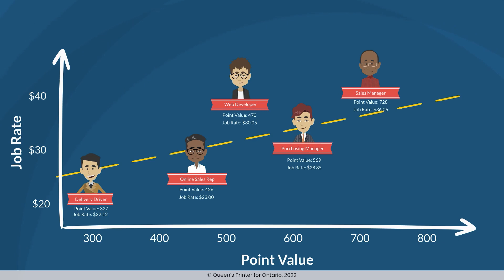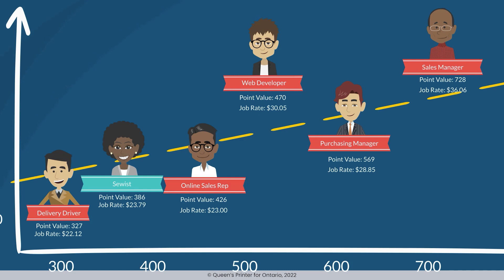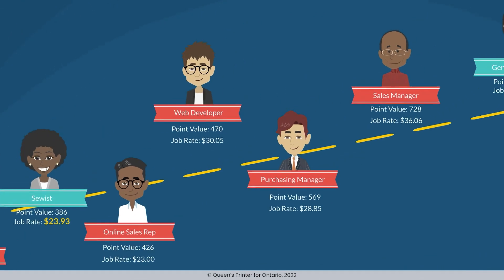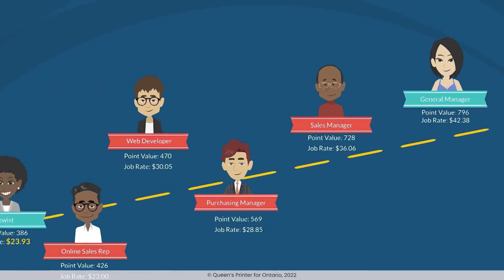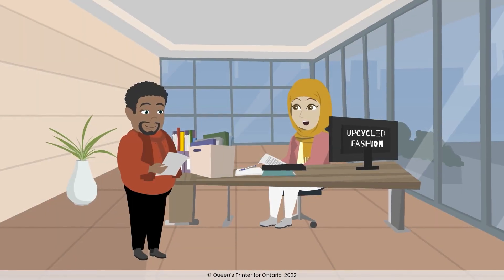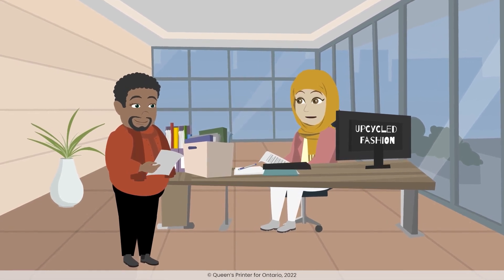A line of best fit is then drawn. The female job classes that do not have direct comparators from the job-to-job comparison are then also placed on the graph. If the female job classes fall below the line, then they are owed adjustments to bring them up to the line. If they are above the line, they are not owed adjustments. The toolkit does not show a graph, but this is a visual example of what is happening in the background.